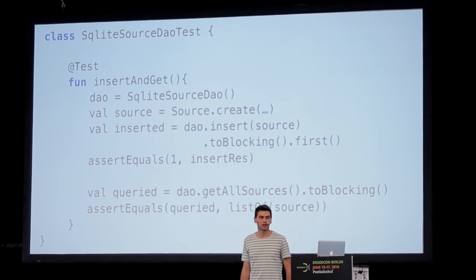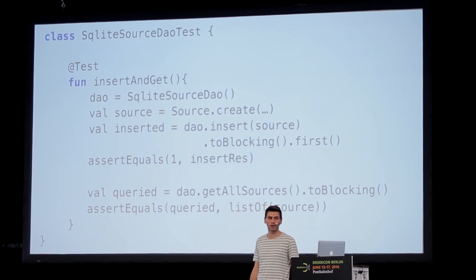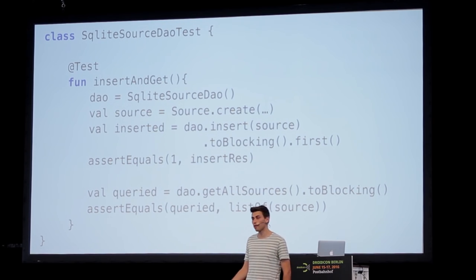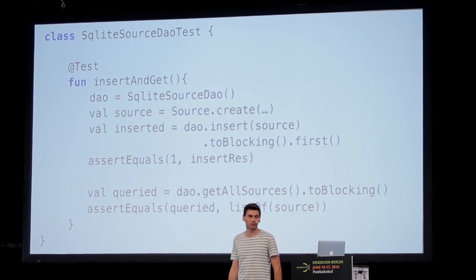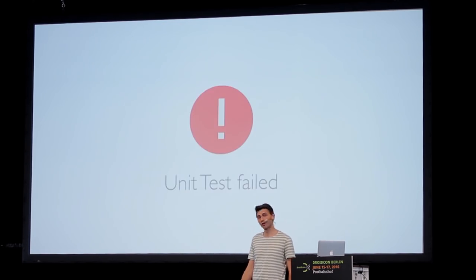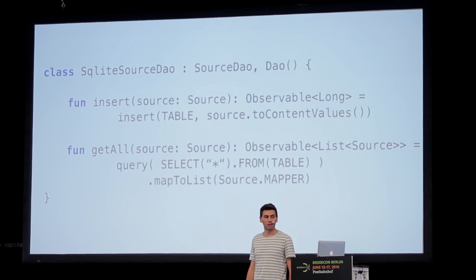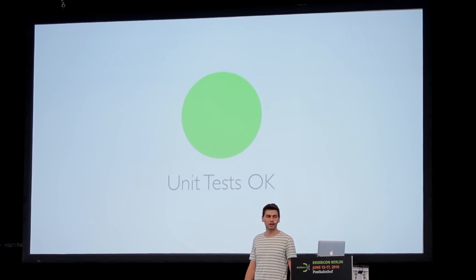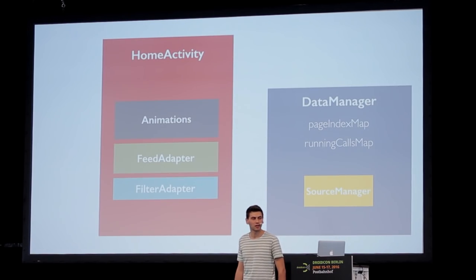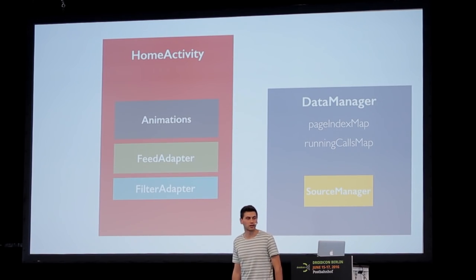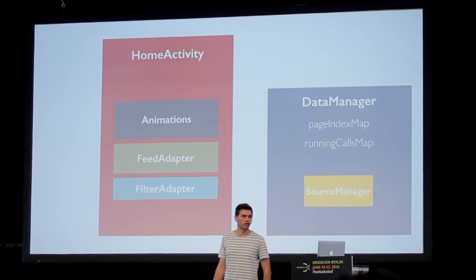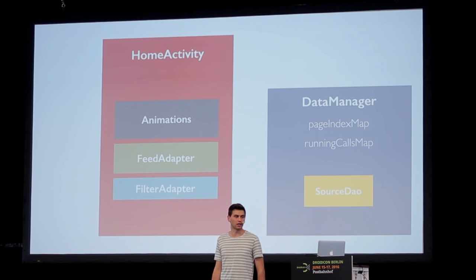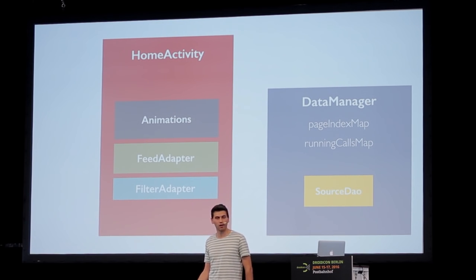Once the implementation passes, we go ahead and write a little more of a unit test — now we write a query to get out the inserted item. It again fails because we haven't implemented it yet. We implement it, and finally we are done.